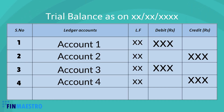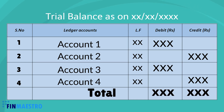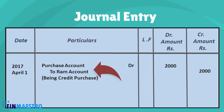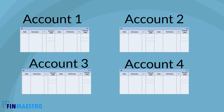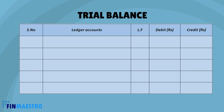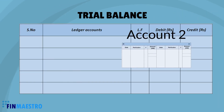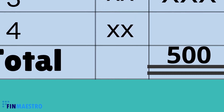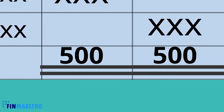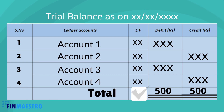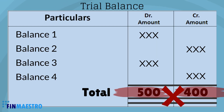You total each amount column. As transactions are journalized and posted under the double entry system, the closing balances of all ledgers are brought into the trial balance. The total of the debit balances must be equal to the total of the credit balances. This is your control check — if the two sides do not agree,